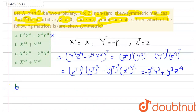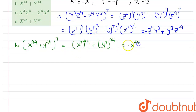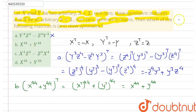Now let us check option B: X⁴⁴ + Y⁴⁴. We find the transpose, which equals (Xᵀ)⁴⁴ + (Yᵀ)⁴⁴. The value of X transpose is −X, but (−X)⁴⁴ = X⁴⁴ since 44 is even. Similarly, (−Y)⁴⁴ = Y⁴⁴. So the transpose equals X⁴⁴ + Y⁴⁴, the same value. Therefore X⁴⁴ + Y⁴⁴ is a symmetric matrix and not skew symmetric, so option B is also not correct.